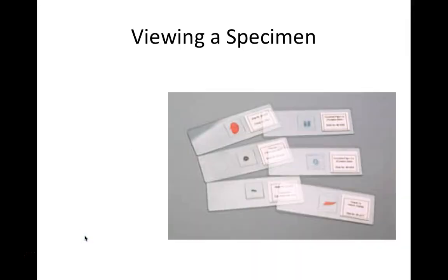When viewing a microscope, we have a variety of different kinds of specimens we could look at. Some of them are rather large — maybe whole insects that are preserved and placed on a microscope slide — and some are really tiny.